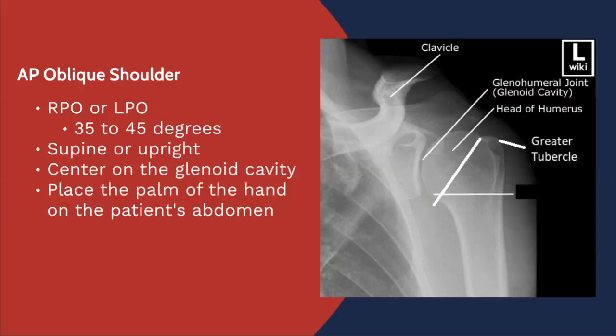In order to obtain this view, there are a couple of things to consider. The patient should be in an RPO or LPO position — for this view here, the patient is in a left posterior oblique, obliqued about 35 to 45 degrees. We can do this image either supine or upright, and frequently this is done along with a shoulder arthrogram, where the physician inserts the needle into the joint space and asks the patient to be obliqued in order to better visualize the place of insertion for the needle.